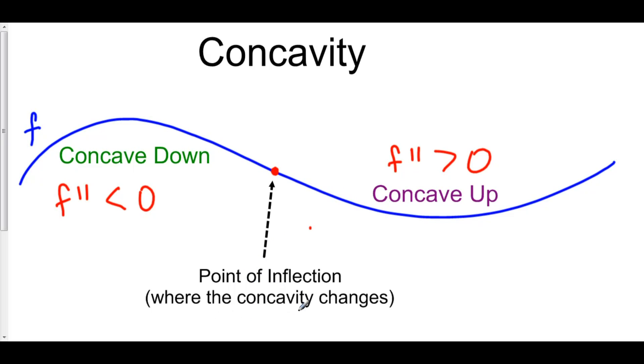And it is where the concavity changes. So here we have an inflection point because our function f is changing from concave down to concave up.